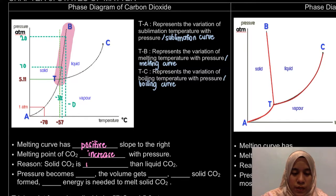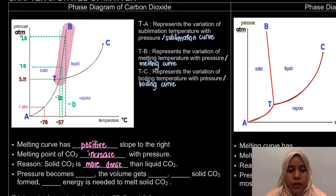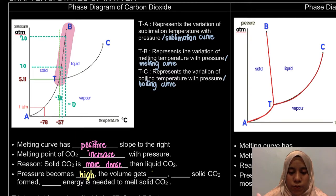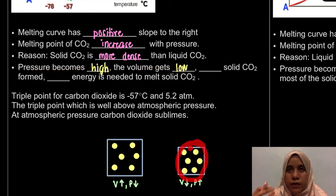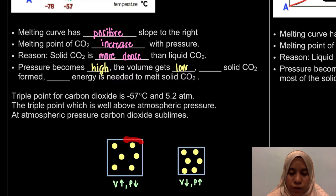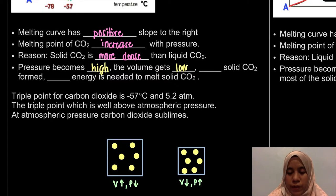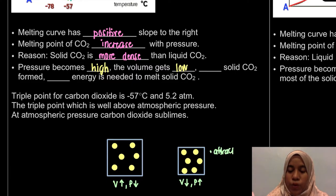The reason is that solid CO2 is more dense than liquid CO2. When pressure becomes high, the volume gets low. When volume is low, the attraction between molecules increases because they are closer together. The IMF — intermolecular forces — the attraction between molecules will increase.